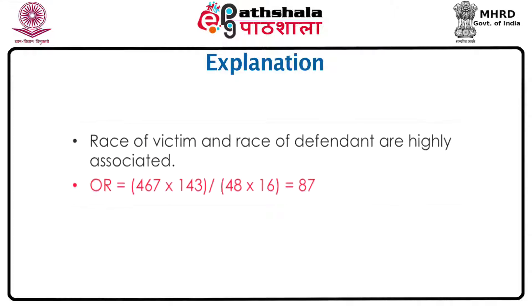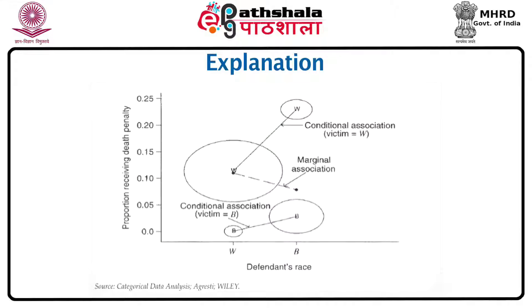What is the reason for this contradiction? The reason is that the third variable — victim's race — acts as a confounder in this example. It is very strongly associated with the two variables of interest: race of the defendant and the death penalty. Indeed, if we calculate the odds ratio for the race of the victim and the race of the defendant we get a staggeringly high value of 87. Agresti has further tried to explain this diagrammatically in his book on Categorical Data Analysis.